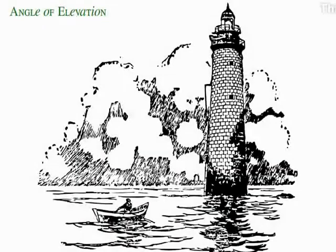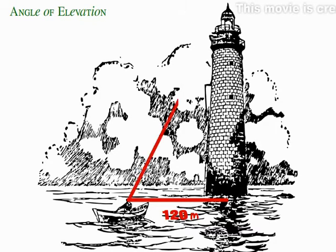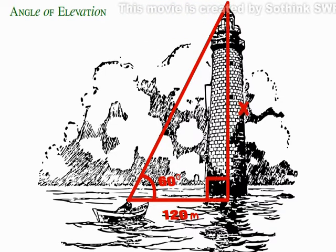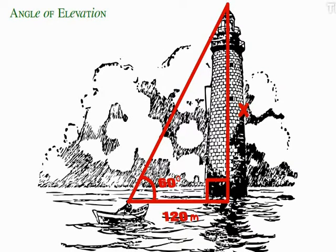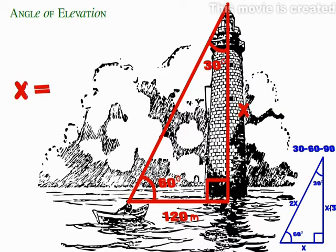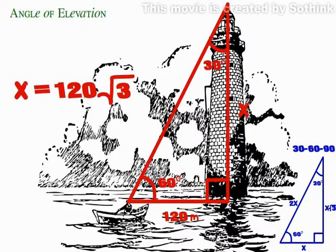A man on a boat is 120 meters from a lighthouse and finds that the line of sight to the top of the lighthouse is 60 degrees above the horizontal. Find the height of the lighthouse. Using the concepts of the 30-60-90 special triangle, we can deduce that the height of the lighthouse is the length of the side opposite the 30-degree angle multiplied by square root of 3.